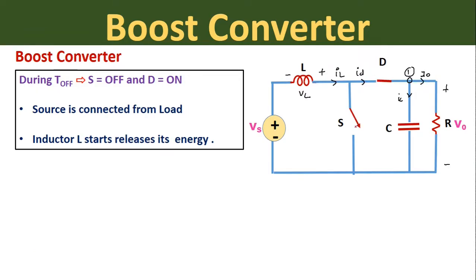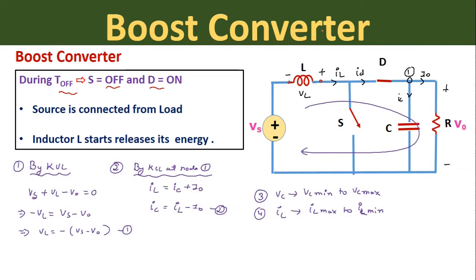When switch S goes into the OFF condition it acts as an open circuit. The inductor then releases its stored energy, and the polarity of voltage across the inductor reverses — minus on one point and plus on the other. Because of this reversed polarity, diode D goes into the ON condition acting as a closed switch. During the OFF period, the source is reconnected with the load, and the inductor provides energy to both the load and the capacitor, which charges up.